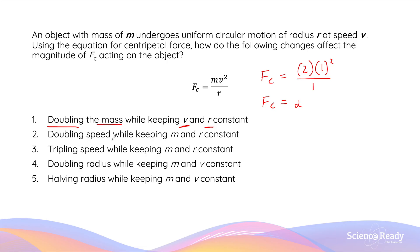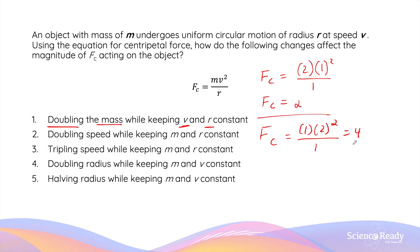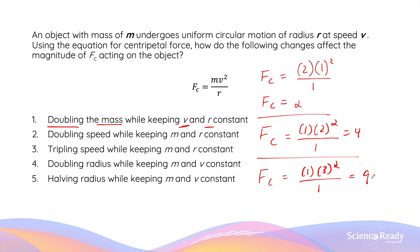If we double the speed and keep mass and radius the same, the centripetal force becomes 1 times 2 squared divided by 1, giving a factor of 4 — the centripetal force required is 4 times as large. If we triple the speed, substituting 3 squared gives a factor of 9, so the centripetal force will be 9 times as great.